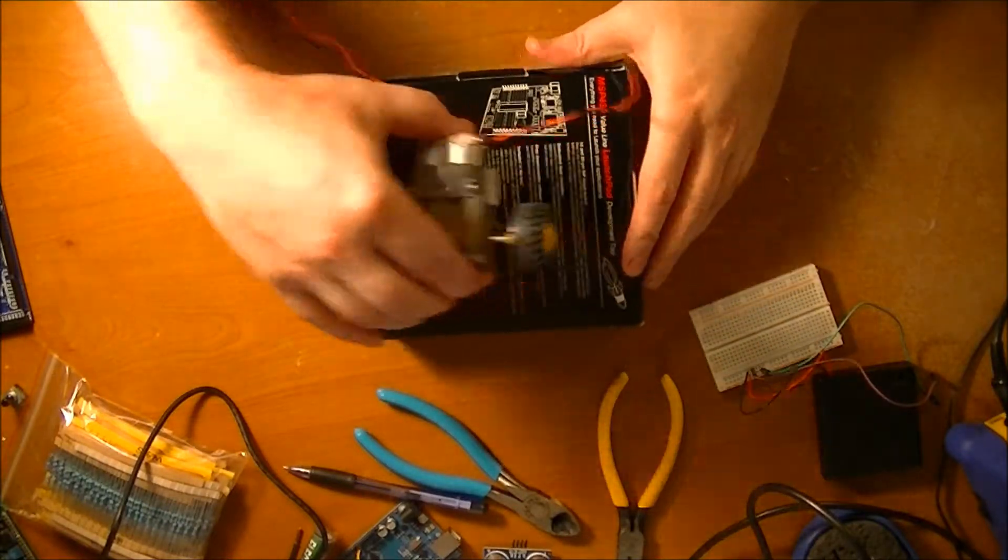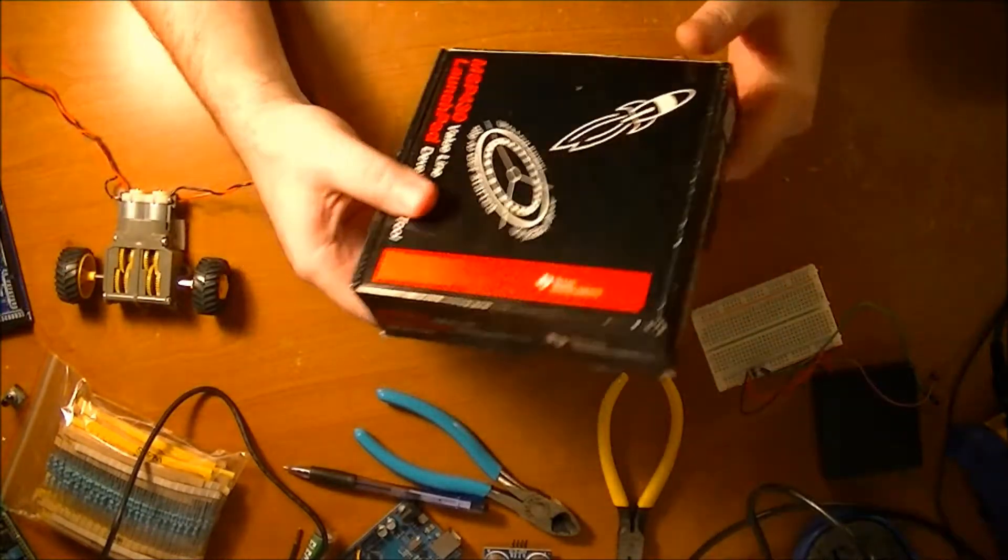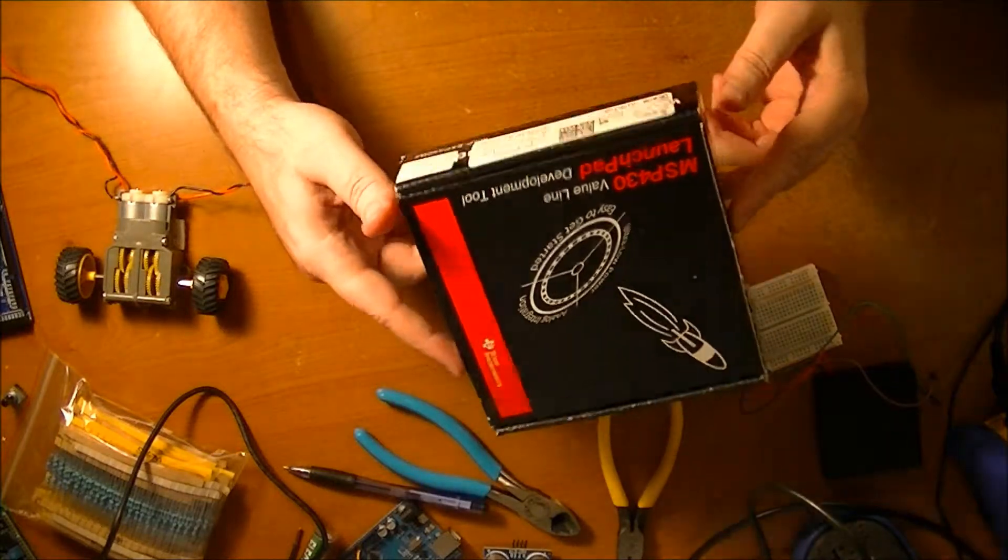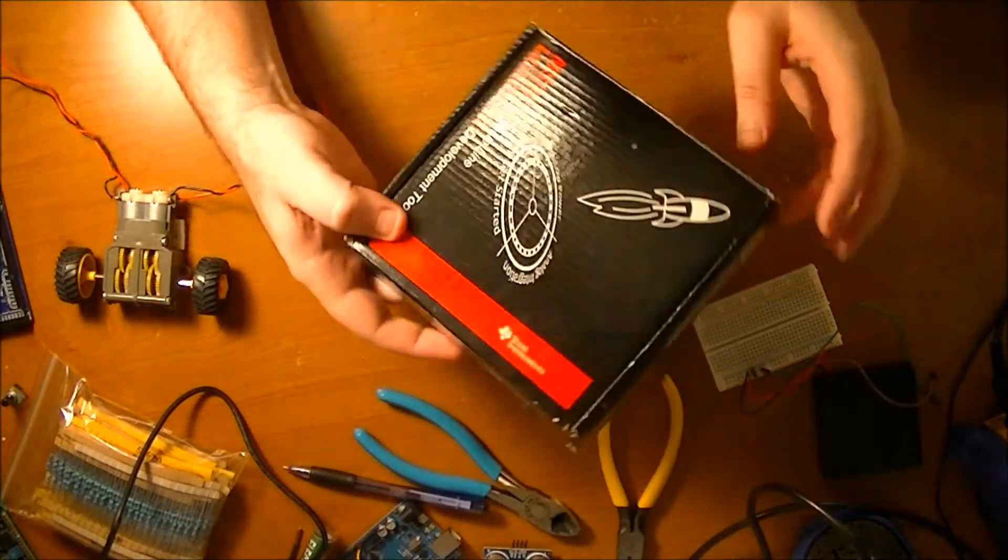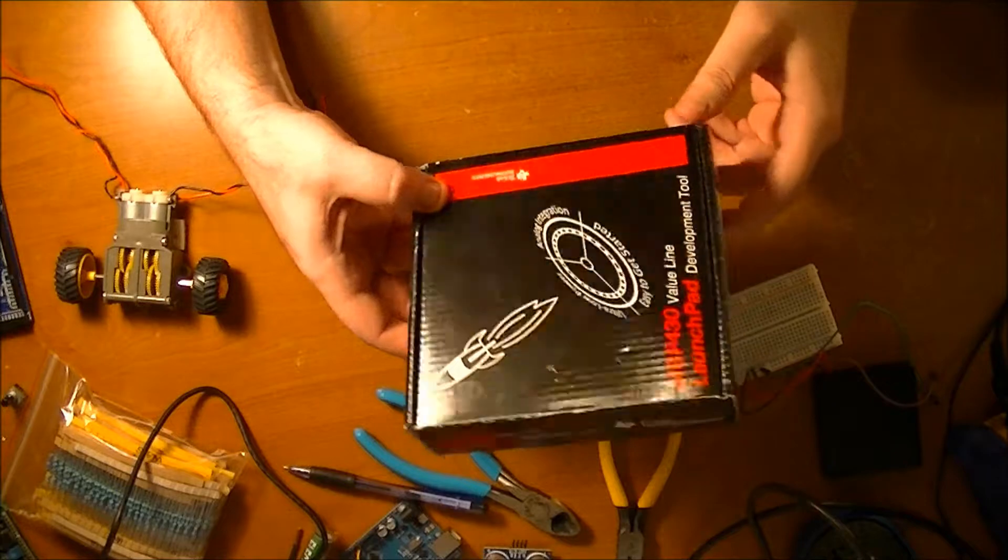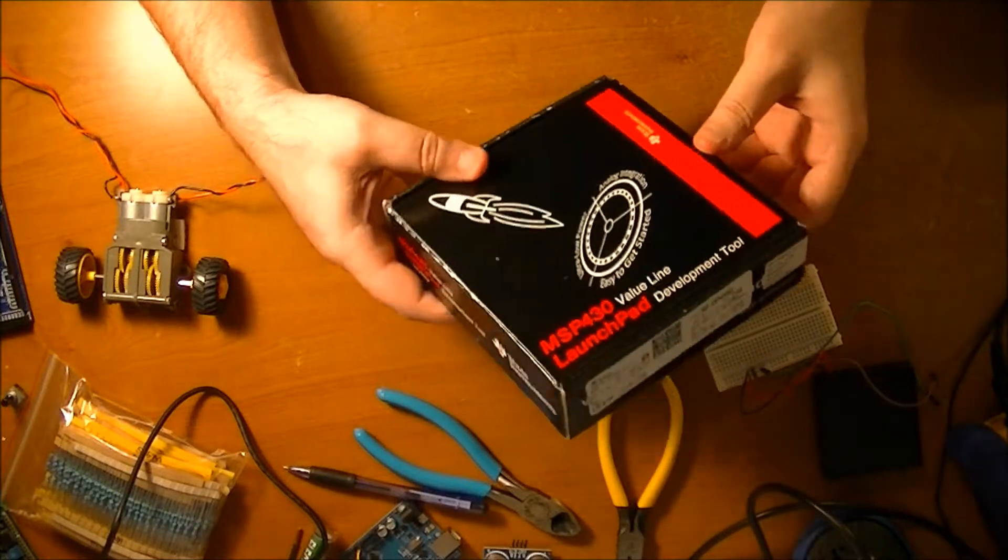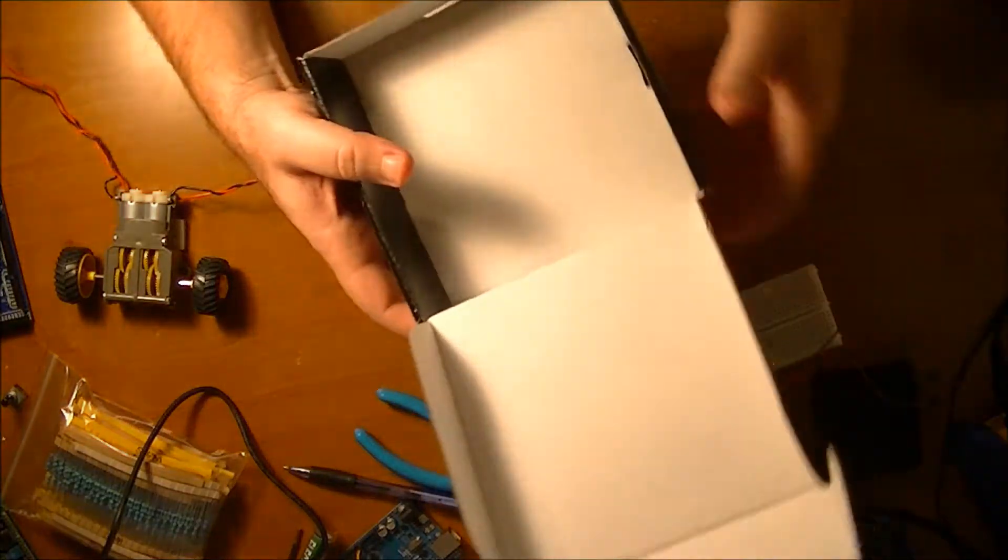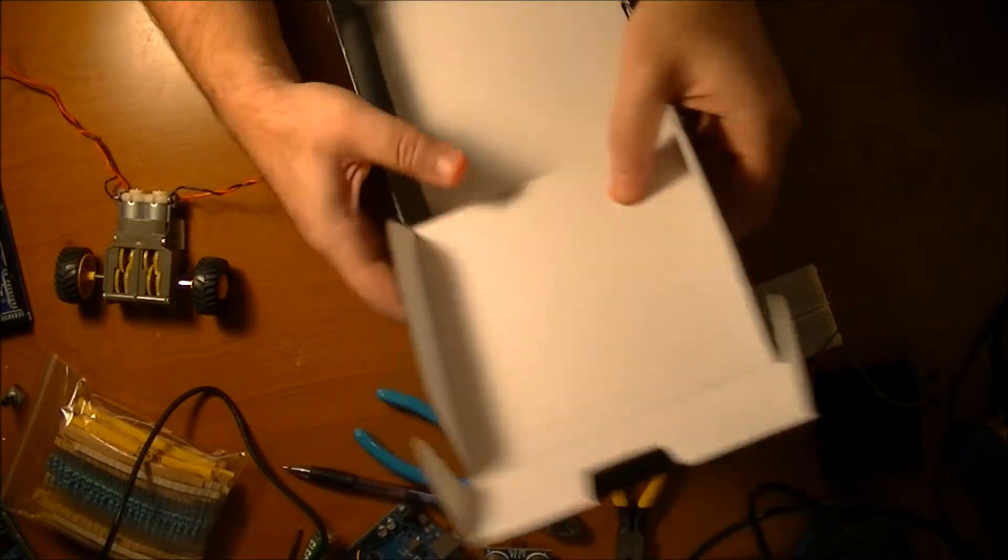Okay, so the goal today is I'm going to try and build a really simple and cheap robot using this box. This is a box for a Launch Pad MSP 430 from TI and it's a pretty nice box, it's pretty sturdy.